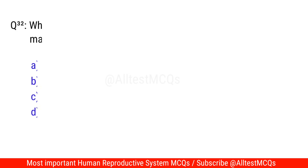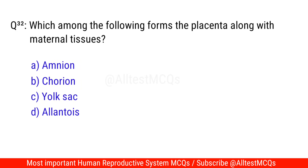Question No. 32: Which among the following forms the placenta along with maternal tissues? The correct option is B. Chorion.